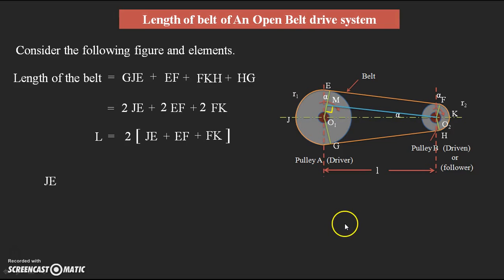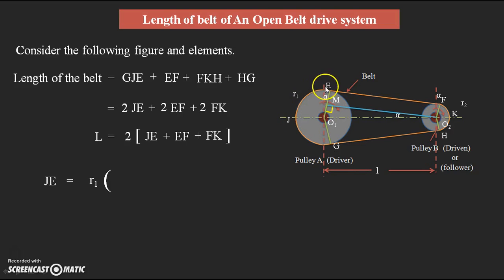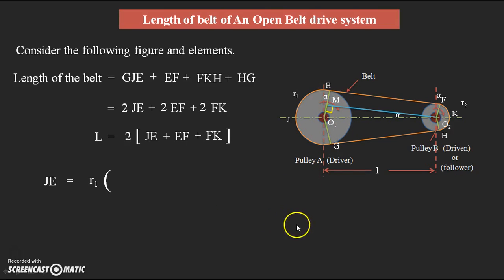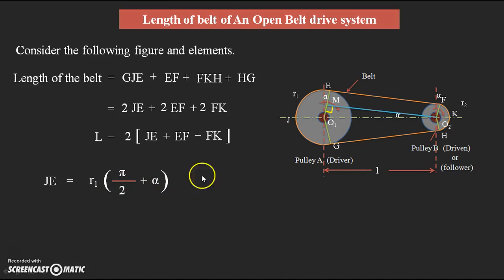For the arc length JE: arc length equals radius times the angle subtended. The radius is r1. The angle for arc JE is 90° plus alpha, because the vertical line from O1 gives 90° and the remaining angle is alpha. So the angle in radians is (π/2 + α), and therefore: JE = r1 · (π/2 + α).